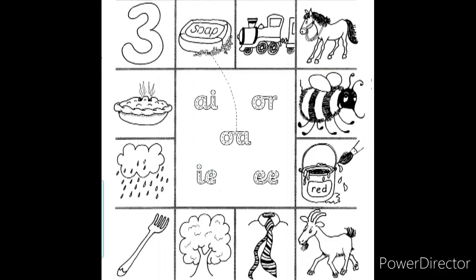Children, this is our next worksheet. See here — they have given you sounds: a, r, o, i, ee in the center box. At all corners and sides, they have given you some pictures. You have to read each picture and find out which of these sounds is present in it. Are you all ready?